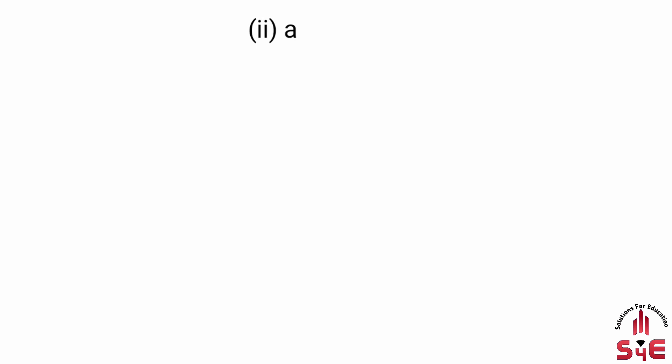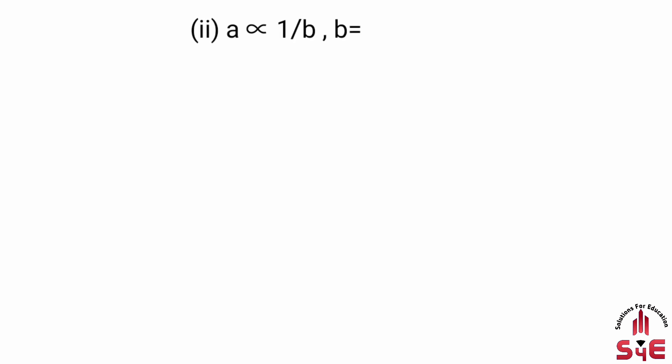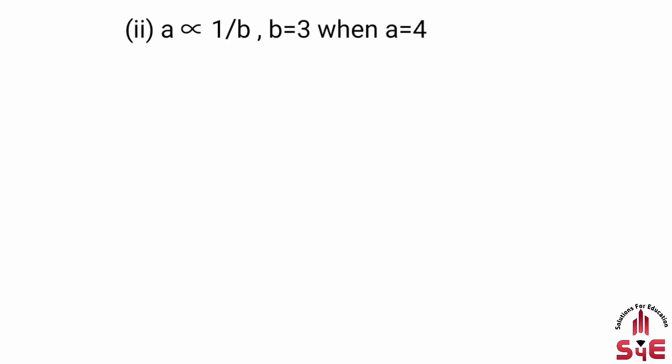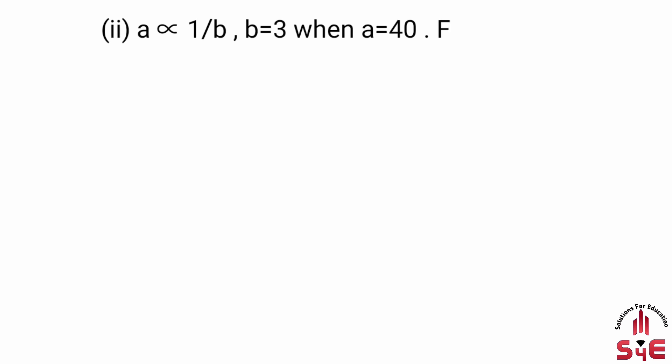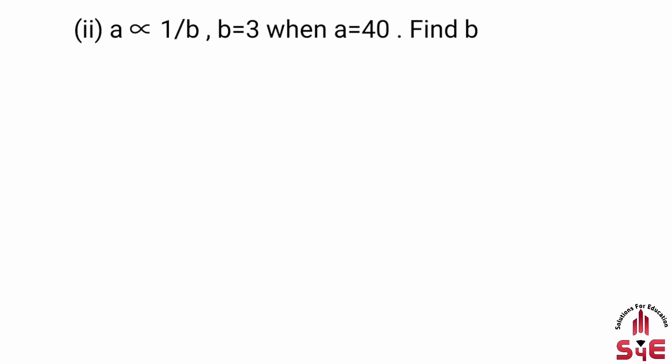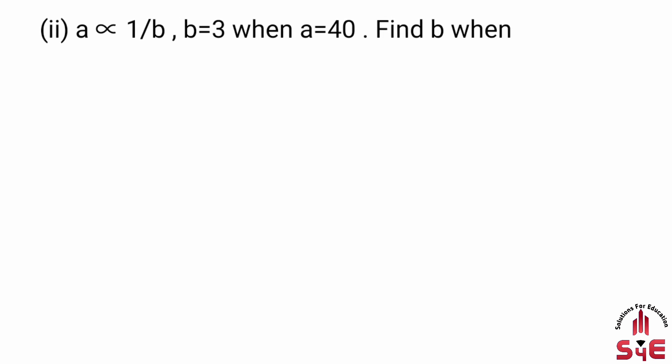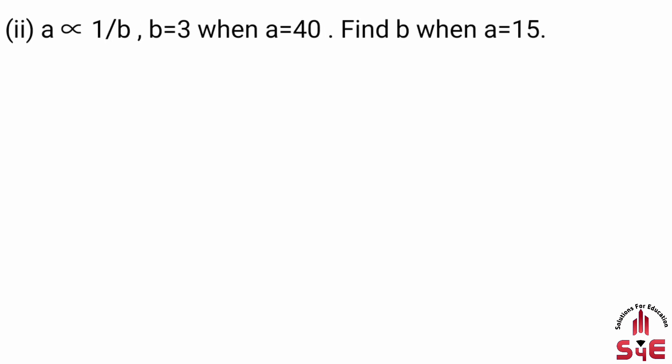Example 2: A is inversely proportional to b. B is equal to 3 when a is equal to 40. Find b when a is equal to 15. Second example inverse variation ya inverse proportion ki example hai. B = 3 hai, a = 40 hai.